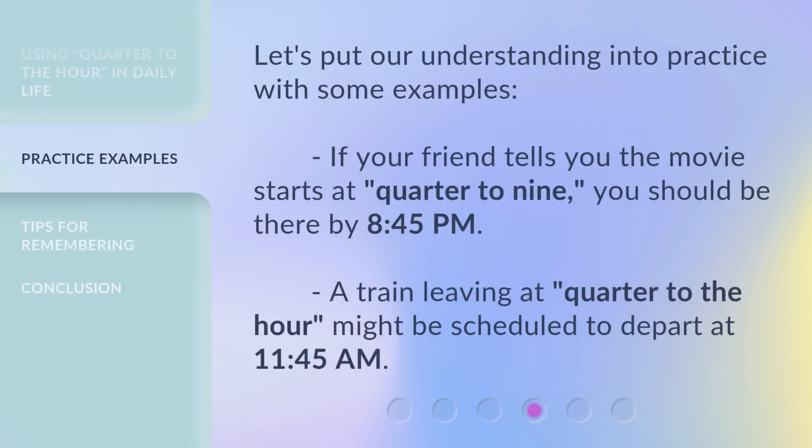Let's put our understanding into practice with some examples. If your friend tells you the movie starts at quarter to nine, you should be there by 8:45 PM. A train leaving at quarter to the hour might be scheduled to depart at 11:45 AM.